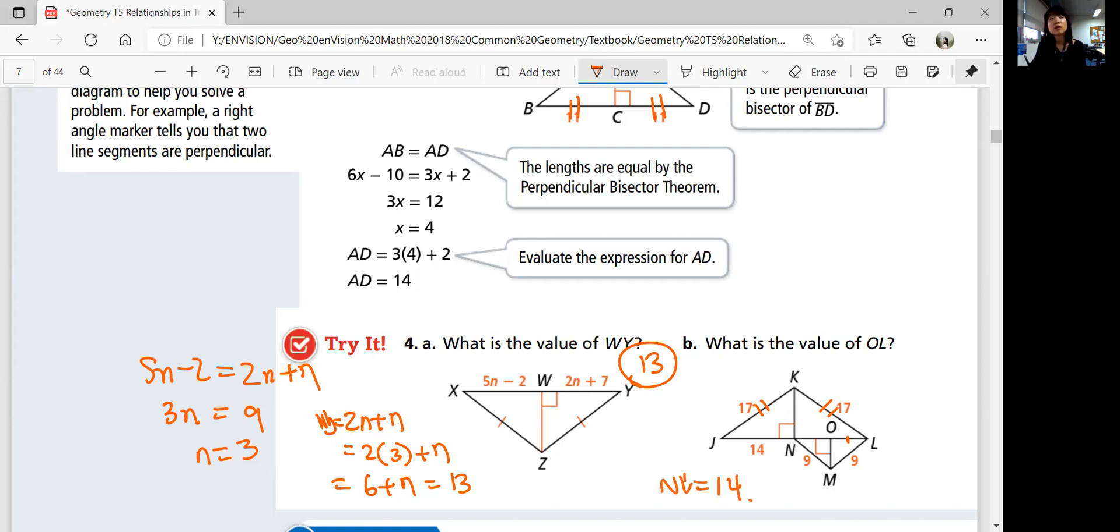And then because OM is also a perpendicular bisector, right, because these two sides are congruent, you know that it's a perpendicular bisector, and so it's going to bisect your line NL. So applying the perpendicular bisector theorem again, you know that O is midpoint of NL. So OL is half of NL, which is half of 14. So 1 over 2 times 14 is 7. So it is 7.